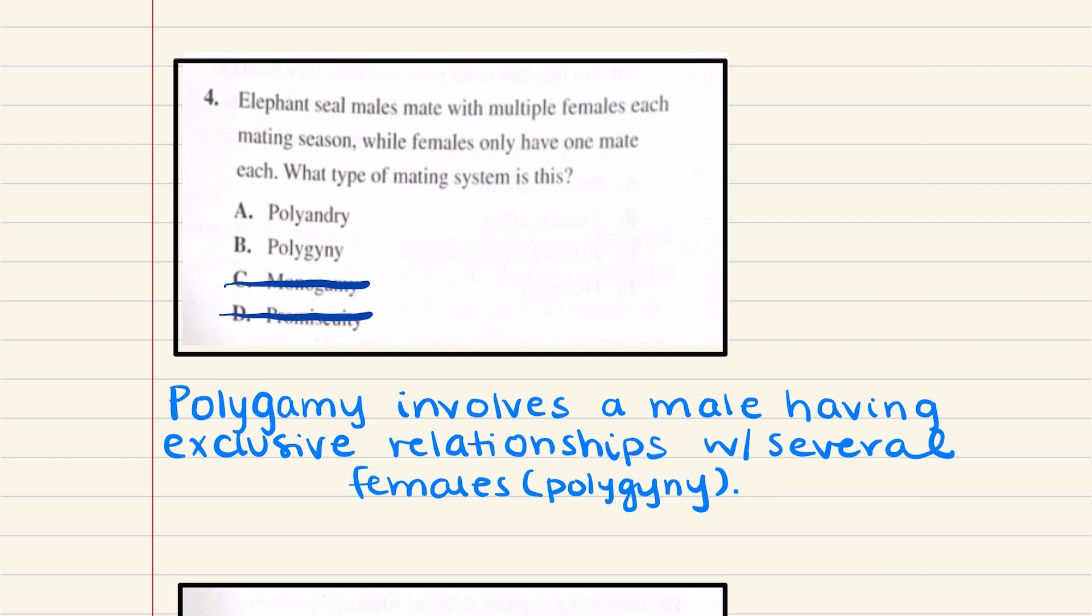The next type that we talked about was polygamy, which consists of one member of a sex having multiple exclusive relationships with the members of the opposite sex. Now one type is polygyny, which is a male with multiple females, but there's also a different type. I only have this one written, but another type is polyandry, which is a female with multiple males. Now here, what's being explained is that there's a male with multiple females. This falls under the umbrella of polygyny, and so that would be the correct answer. So four is going to be B. Wonderful.